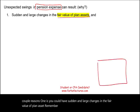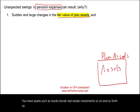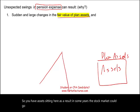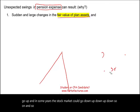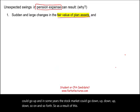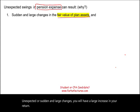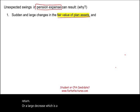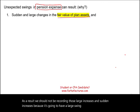You have assets sitting in the plan asset — stocks, bonds, real estate investments, and so forth. In some years the stock market could go up, in some years it could go down. As a result of these unexpected, sudden, and large changes, you will have a large increase in your return or a large decrease, which is a loss. We should not be recording those large and sudden changes because it will create a large swing on pension expense.